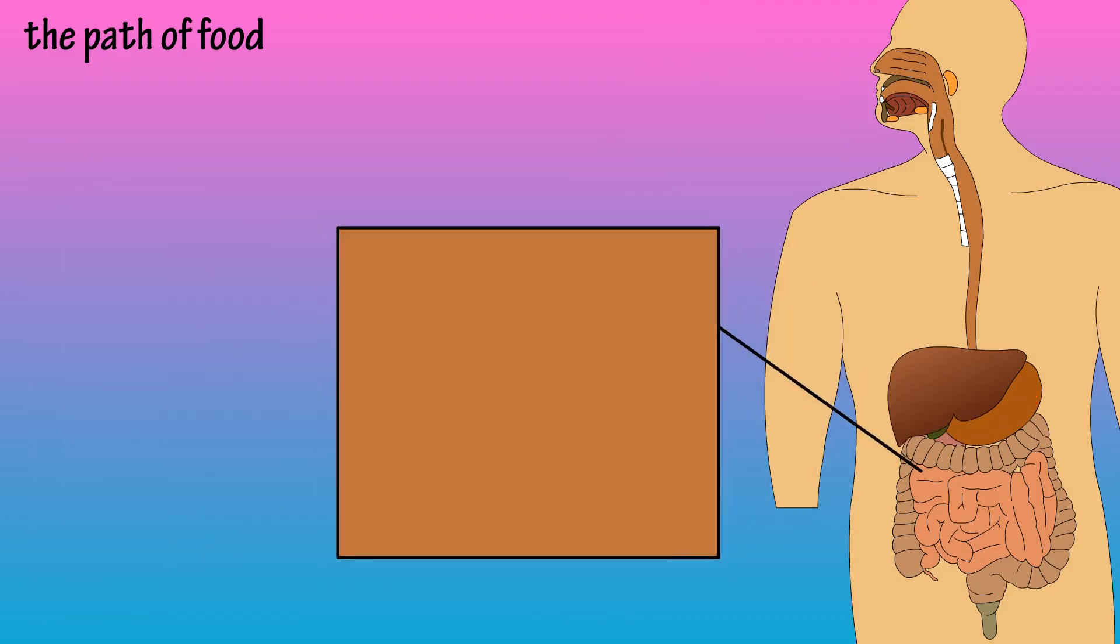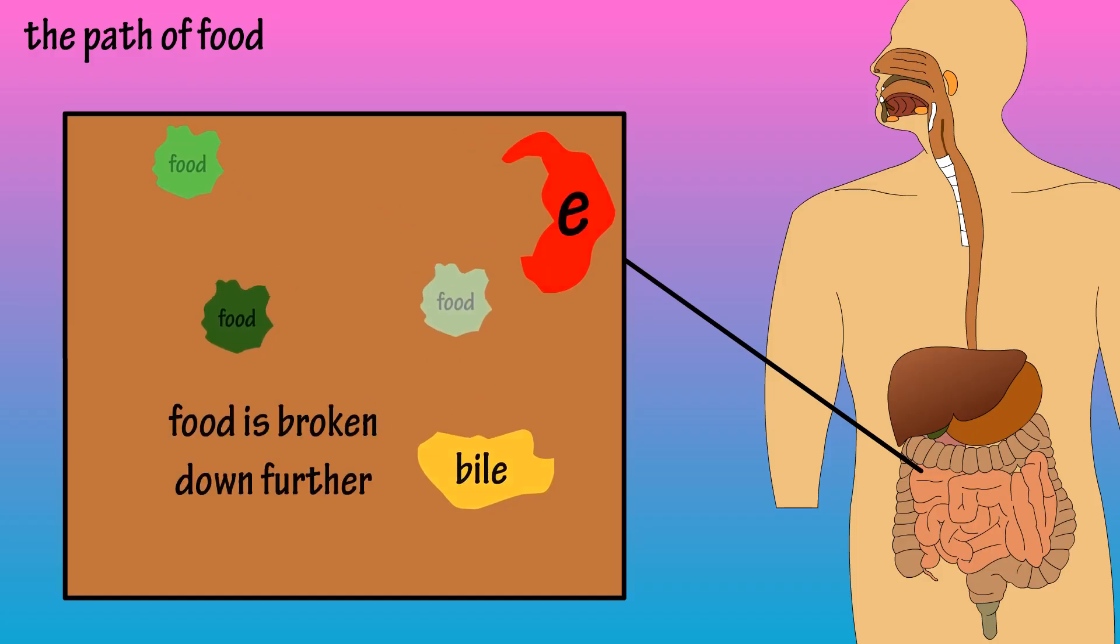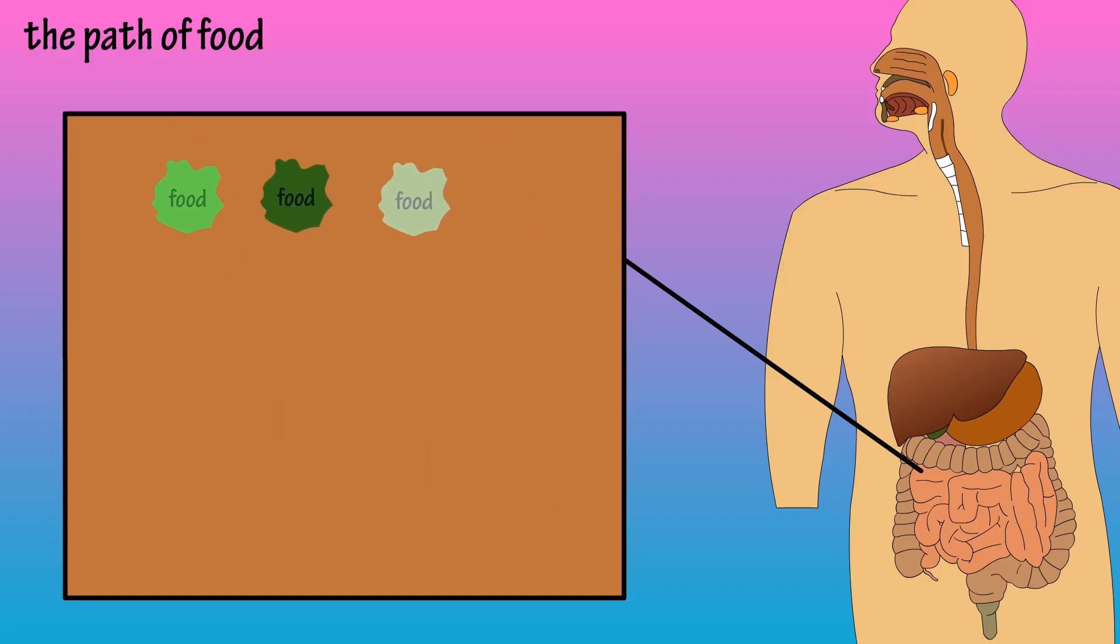In the duodenum, the breakdown of food, or chyme, continues with the help of enzymes from the pancreas and bile that is produced by the liver and stored in the gallbladder. Next, the food moves into the second section of the small intestine, the jejunum.